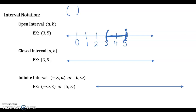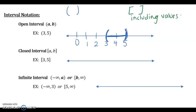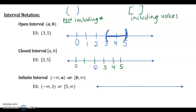The next type is the closed interval, which uses the hard bracket — the square bracket. This is when you are including your values, like a closed circle in inequalities, whereas parentheses means not including the number. For the closed interval from 3 to 5, I make my number line and instead of open parentheses on 3 and 5, I use square brackets, indicating that I will include the values 3 and 5 in this interval.